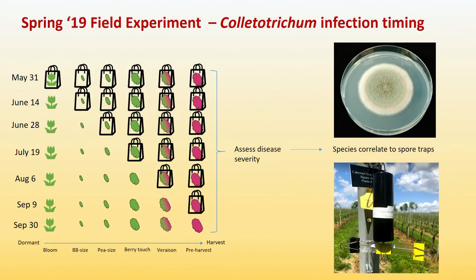I want to switch to a different fungal pathogen called Colletotrichum, which is well known for causing bitter rot on apples, anthracnose on strawberries, as well as ripe rot on grapes.